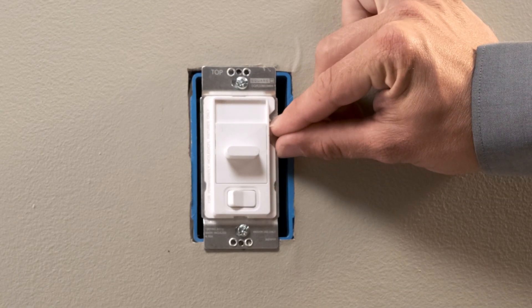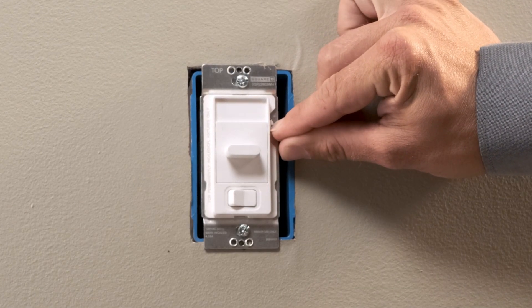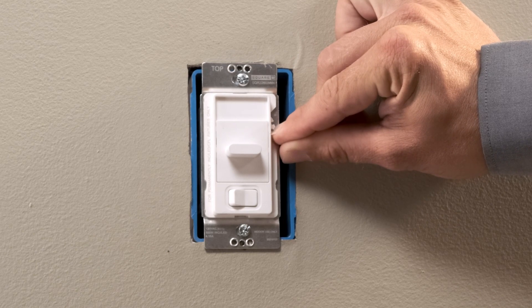If the light starts flickering prior to turning off, adjust the settings wheel either up or down until the flickering stops.